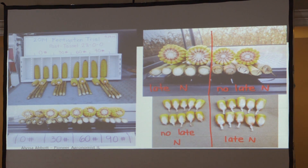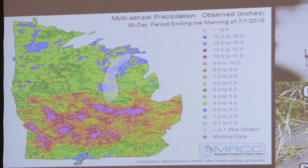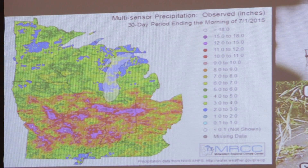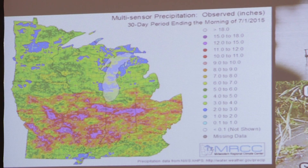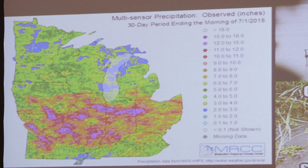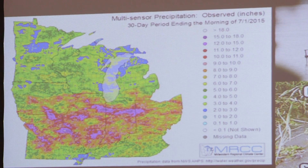At R4, R5, and R6 is when we grow our kernel size and test weight, so we really need nitrogen through those stages as well. Here in Michigan a lot of growers believe we need nitrogen needs early, but a corn plant actually needs a majority of its nitrogen after tassel — very close to 50 percent.